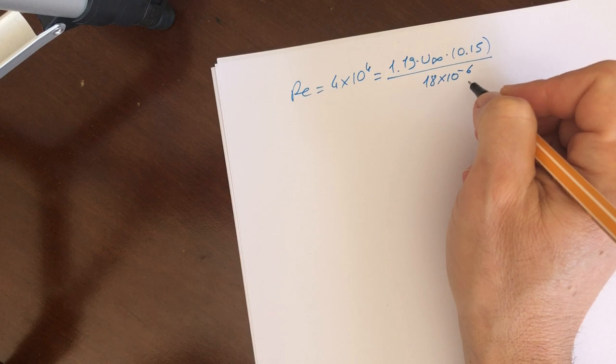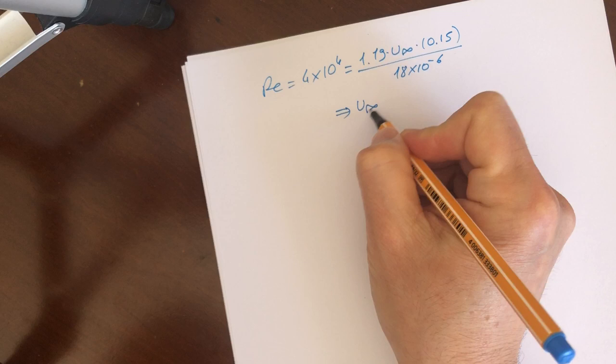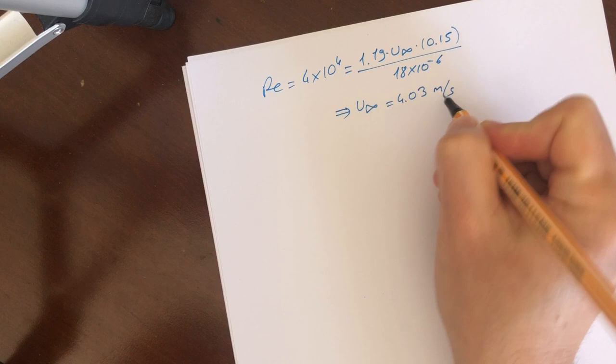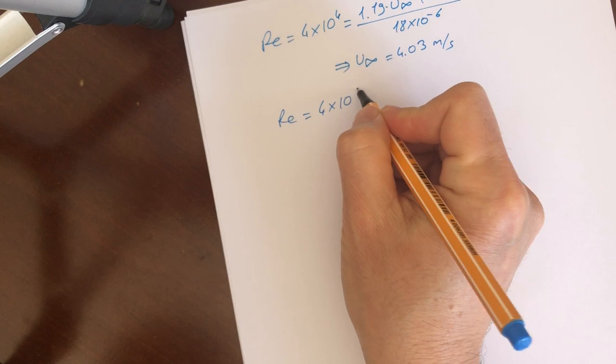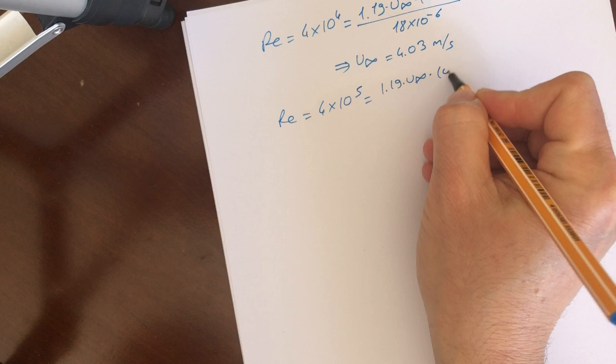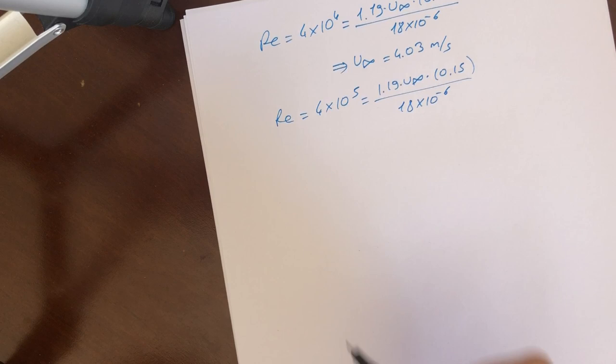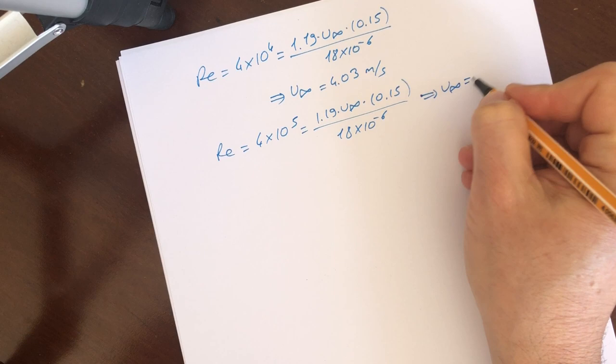From these equations, we can calculate U infinity as 4.03 meter per second. If we choose the Reynolds number equal to 4 by 10 to the 5, in this case we will do the same thing as we know the other values, and if we put those values to equation, we can find U infinity as 40.3 meter per second.